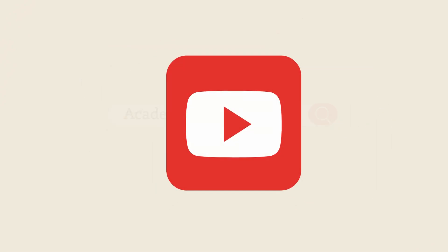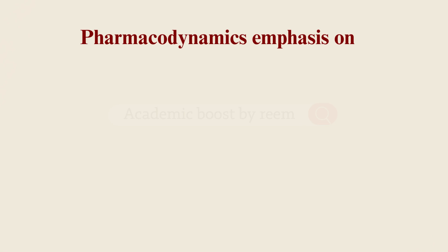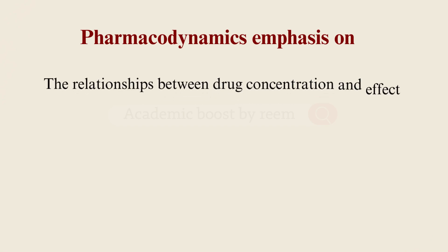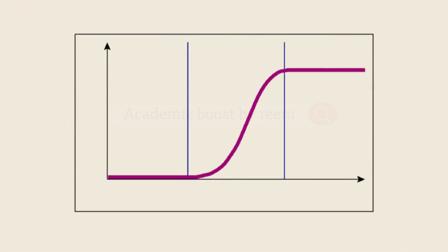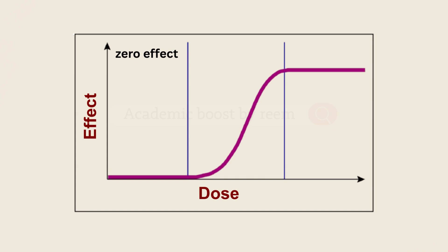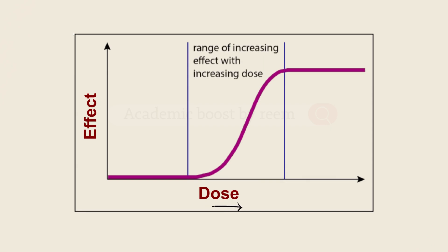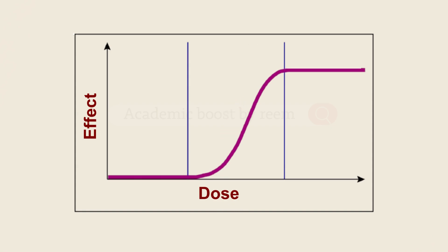Pharmacodynamics emphasizes the dose-response relationship, which is the relationship between the drug concentration in the body and the effect it's going to produce. In this curve, we have the dose on the x-axis and the effect or response on the y-axis. At first we have zero dose and as a result we have zero effect as well. When we start to increase the dose, the effect starts to increase proportionally.